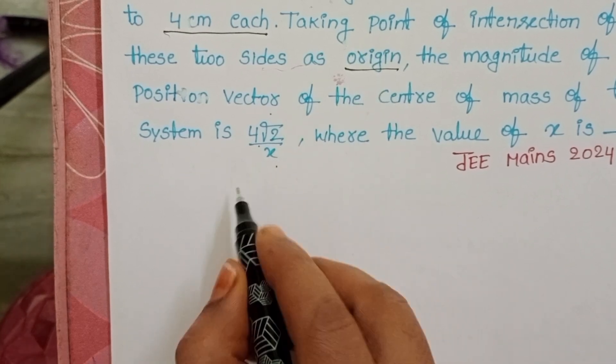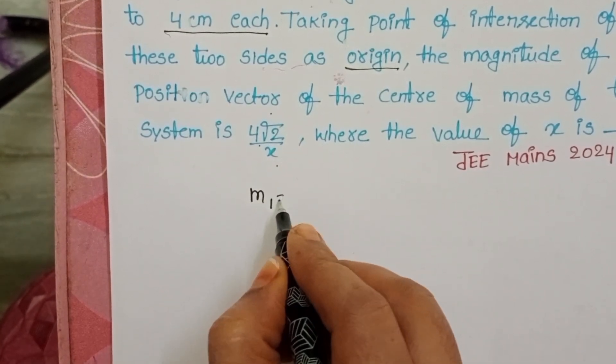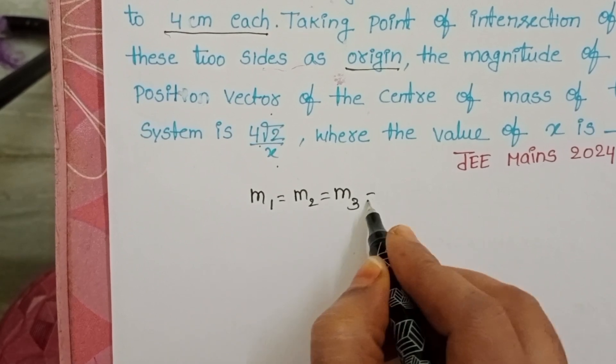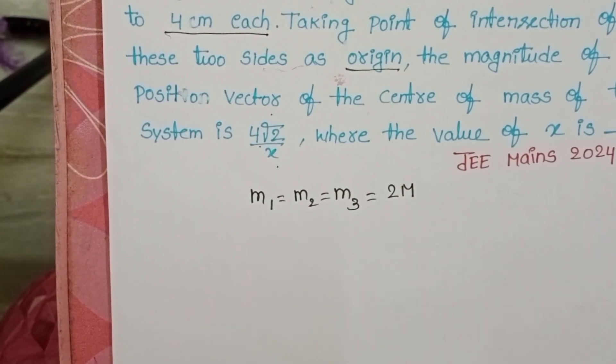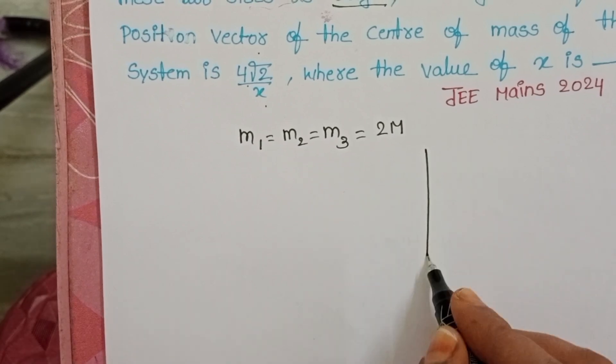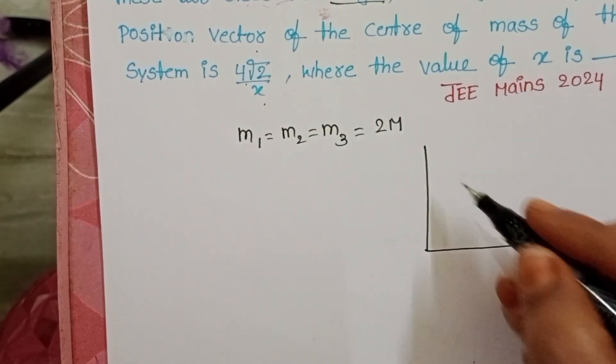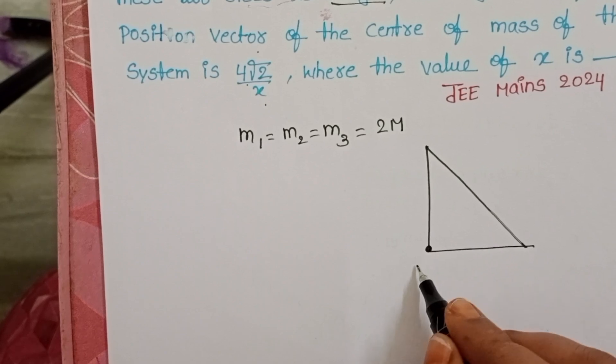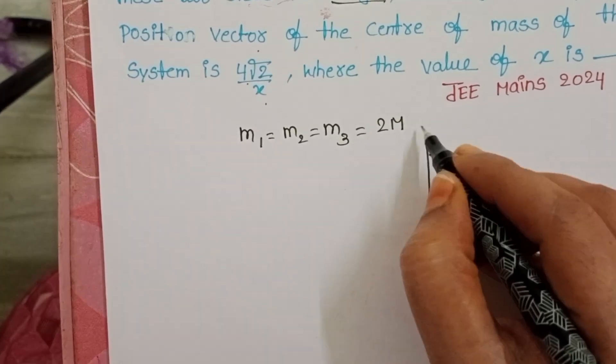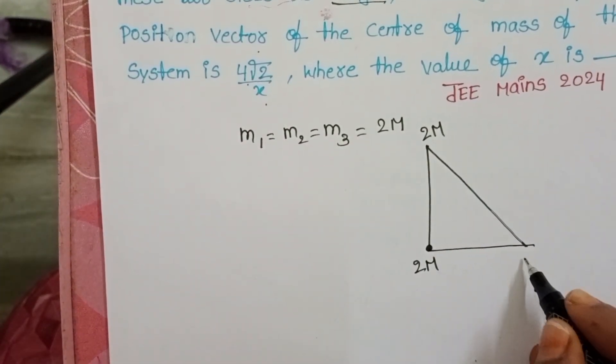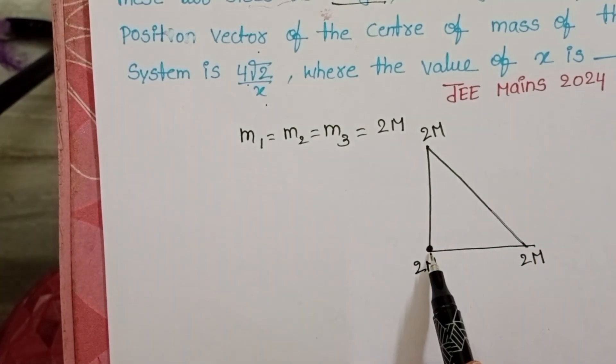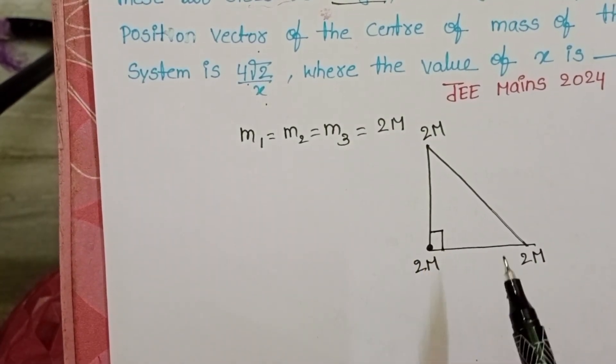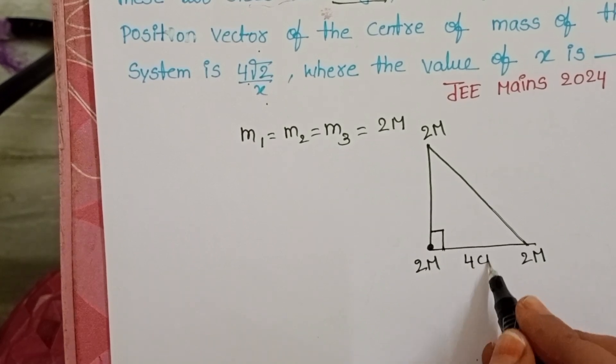In the given problem, the three spheres are identical. Mass of each sphere is 2m. These three spheres are placed at the corners of the right-angled triangle. Take this is the position of the first sphere, second sphere, and third sphere. Now, these two lines are mutually perpendicular to each other. The given length of each side is 4 cm.